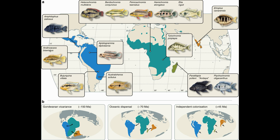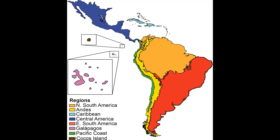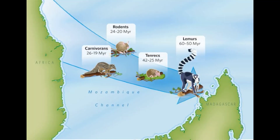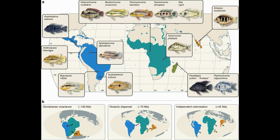In contrast to the vicariance model is the dispersal model, where the biogeographical distribution is the result of organisms immigrating from one place to another. This is the model that explains the biodiversity of the Galapagos and Madagascar — organisms immigrated to these islands from South America and Africa, respectively. For cichlids, that would mean they traveled from one continent to another via a saltwater intermediate.